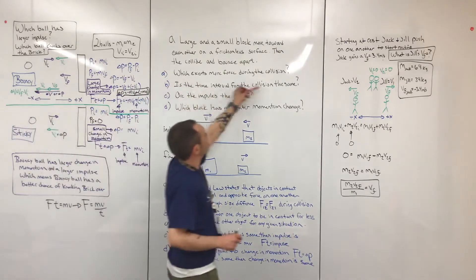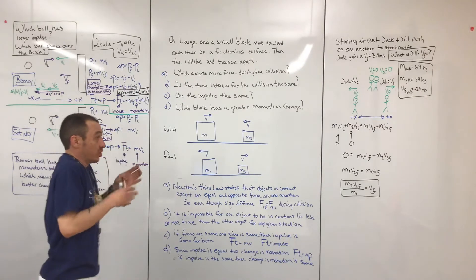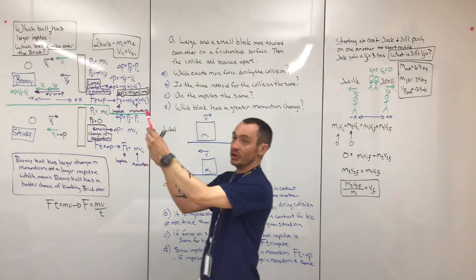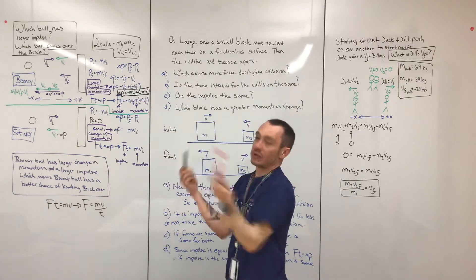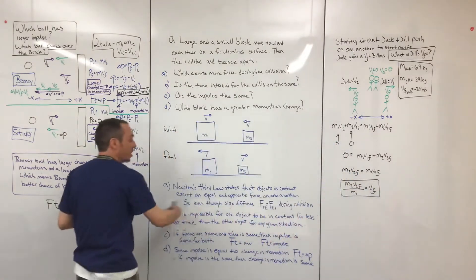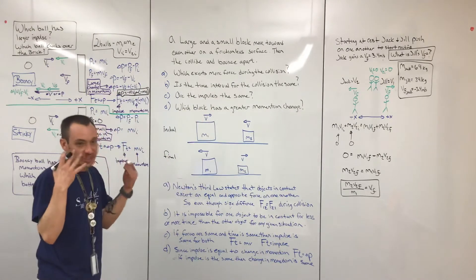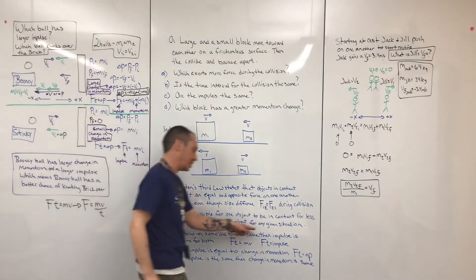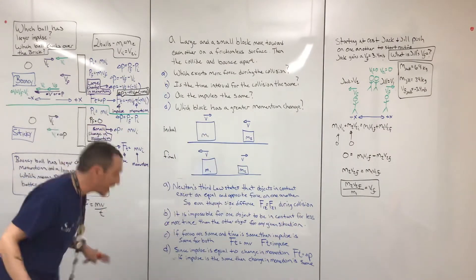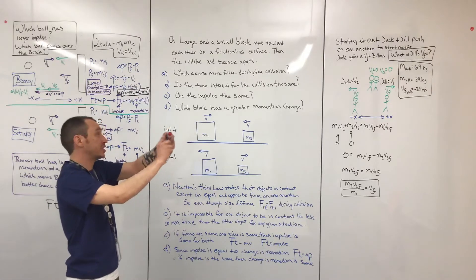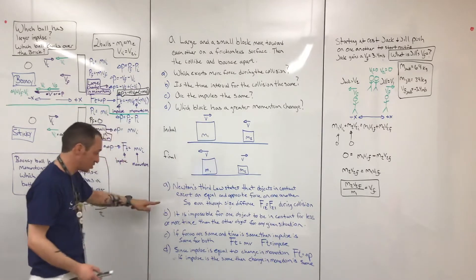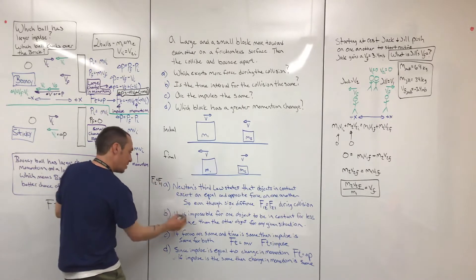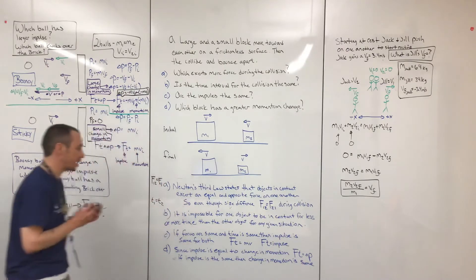Is the time interval for the collision the same for both boxes? Think logically about the reality: it's impossible for one object to be in contact for less or more time than the other object in any given situation. They're spending the same time together. So the time spent in the collision is the same, and the force during that collision is the same — force one-to-two equals force two-to-one, and time one equals time two.